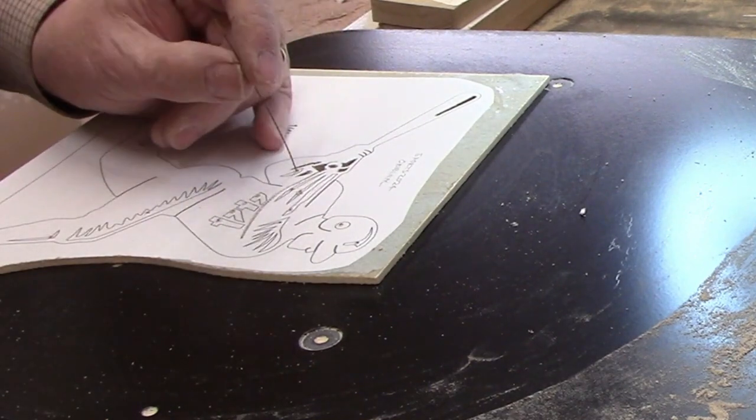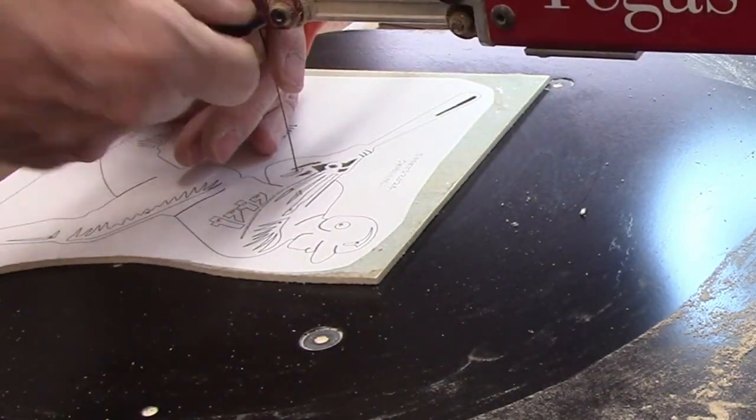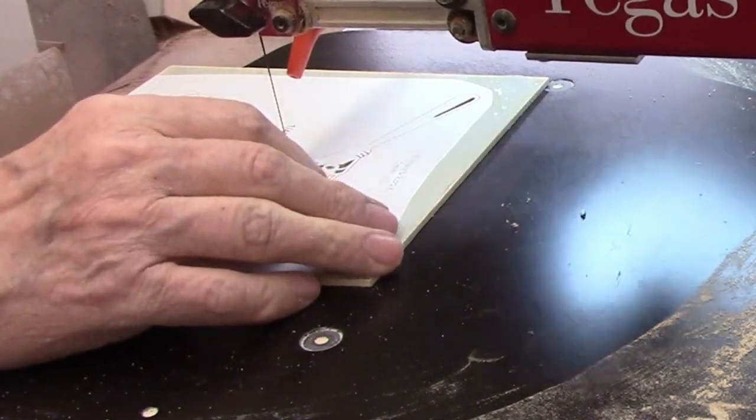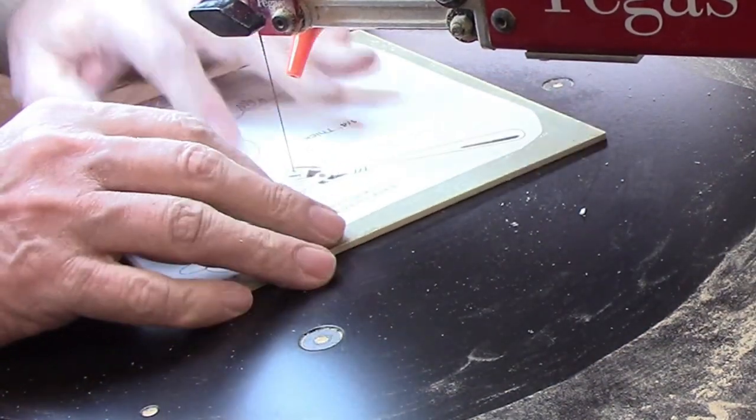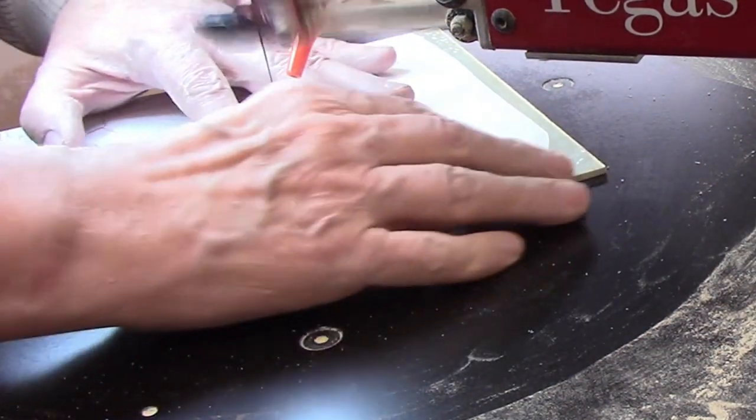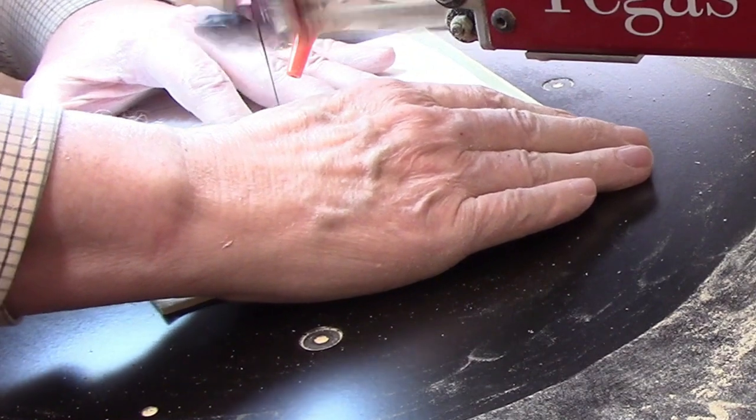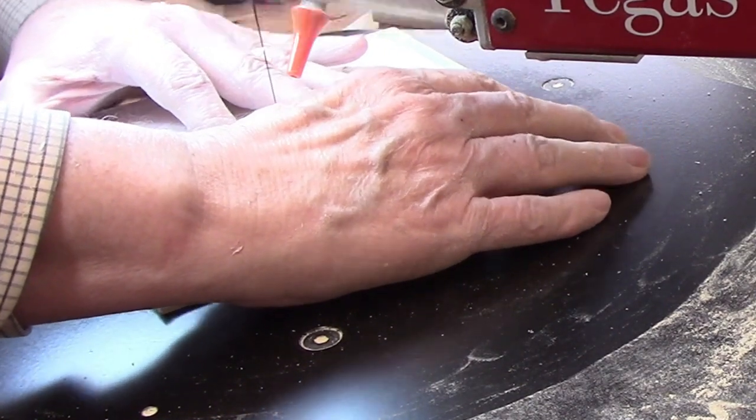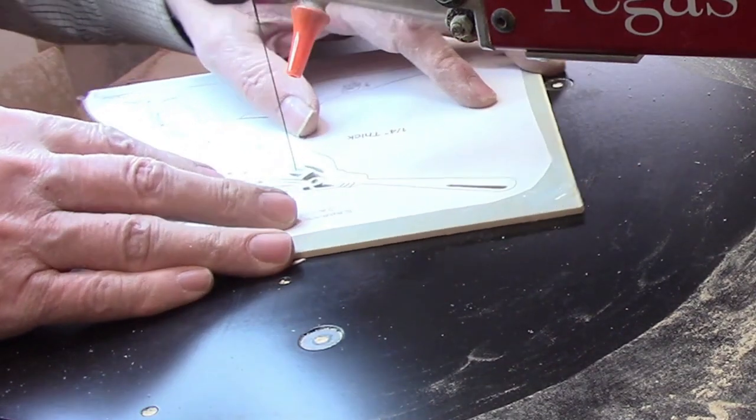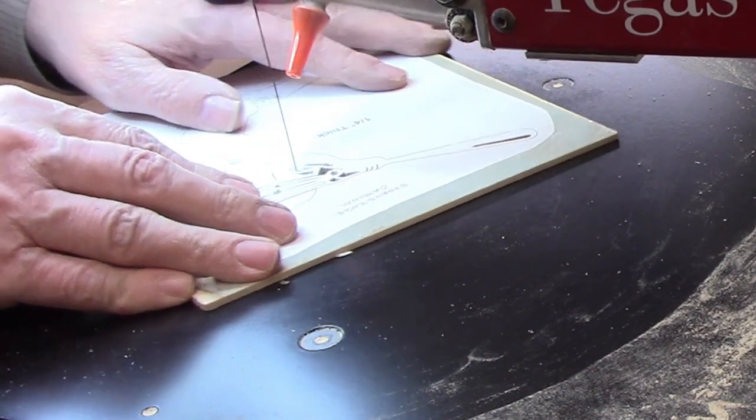I would recommend you start at the pilot hole, then cut along the line to the point of the angle. Then, rather than trying to adjust the workpiece an extreme amount to make the angle, back the blade up to the pilot hole and cut down the line on the other side until you once again reach the point of the angle. This will give you a nice sharp point.